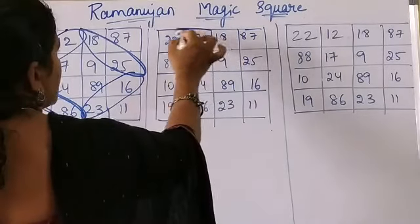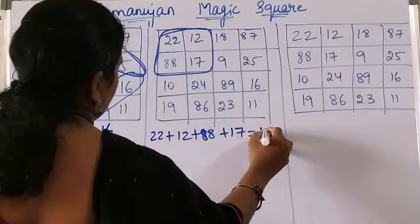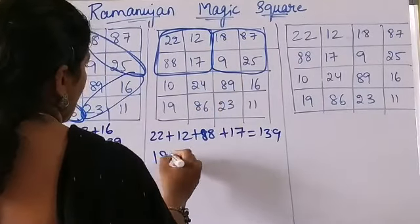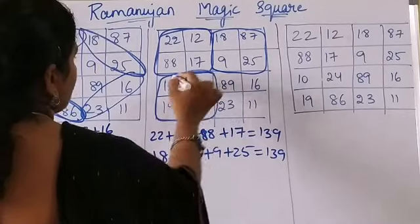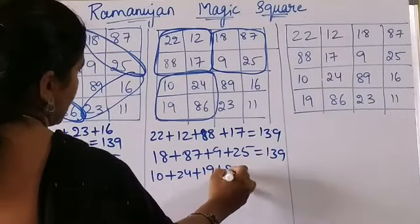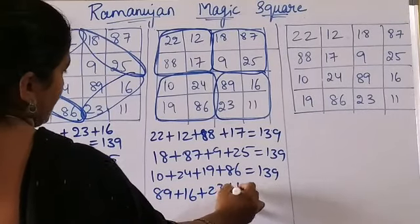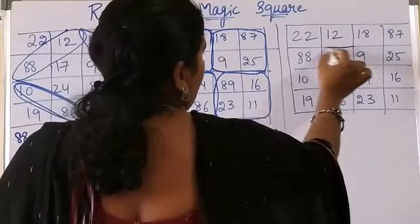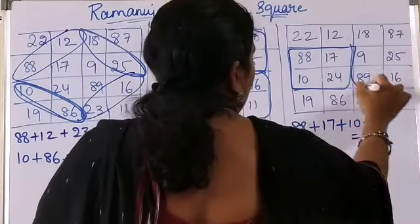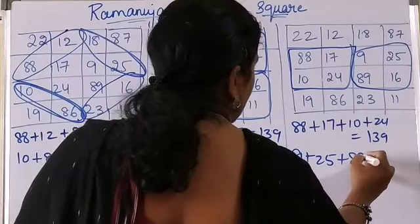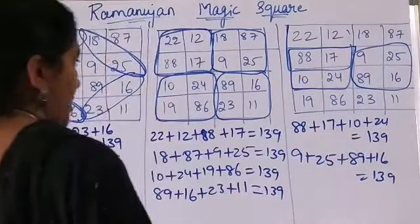Looking at it another way: 22 plus 12 plus 88 plus 17 gives 139. When you add 18 plus 87 plus 9 plus 25, you get 139. And 10 plus 24 plus 19 plus 86 gives 139. When you add 89 plus 16 plus 23 plus 11, also 139. The middle four: 88 plus 17 plus 10 plus 24 gives 139. And 9 plus 25 plus 89 plus 16 also gives 139.